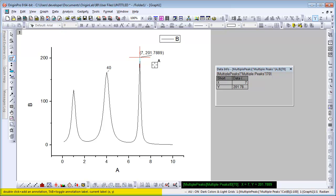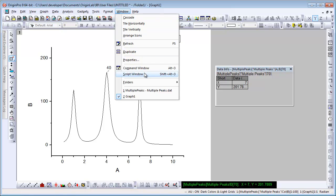Origin even provides the option of allowing you to specify what you want labeled when you double-click. You can do that through script.